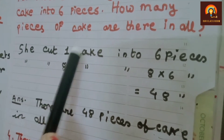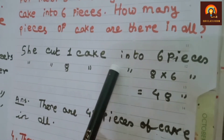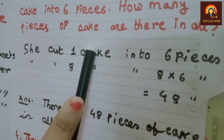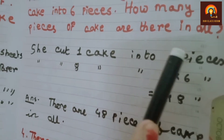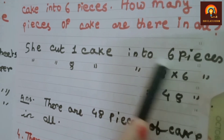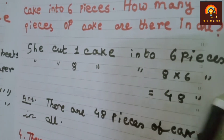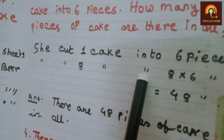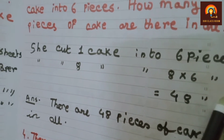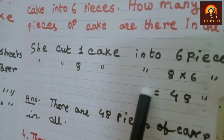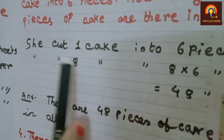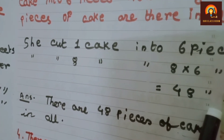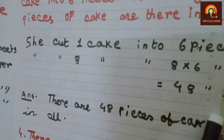She cut 1 cake into 6 pieces. 1 cake is made into 6 pieces. She cut 8 cakes — how many pieces? 8 into 6 multiplied equals 48 pieces.